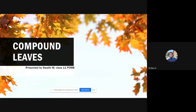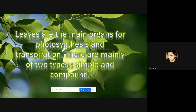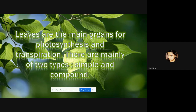Good morning everyone, I'm Swati and today I will be presenting about compound leaves. First, let's discuss what leaves are. Leaves are the main organs of a tree or plant and they are mostly used for photosynthesis and transpiration with a pigment called chlorophyll. Leaves are mainly divided into two types: simple and compound. Here we'll be dealing about compound leaves.